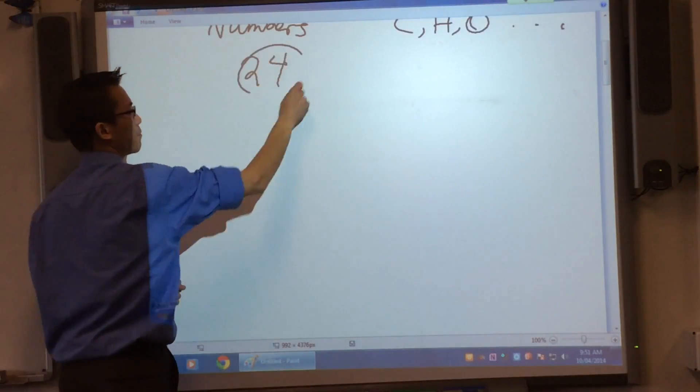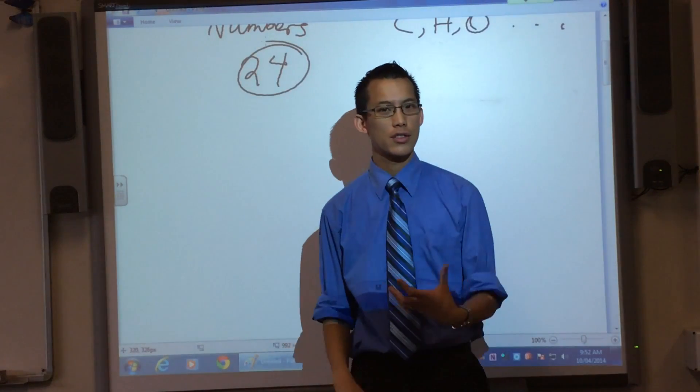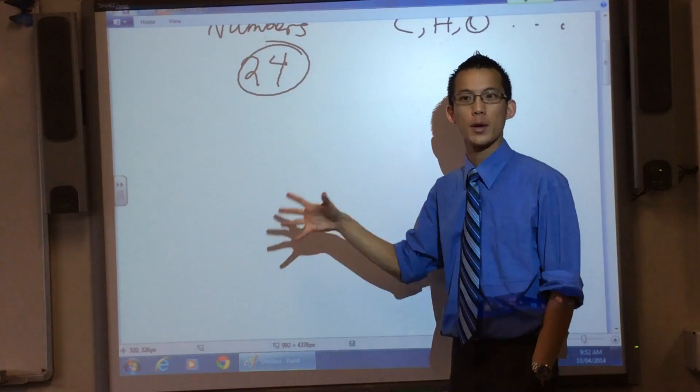A number like, say, 24. How do we carry out the prime factorization of 24? What do we do?